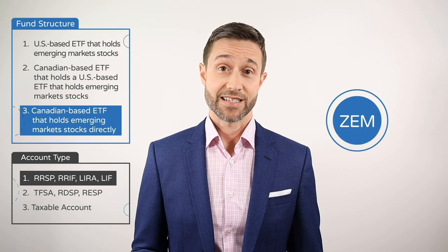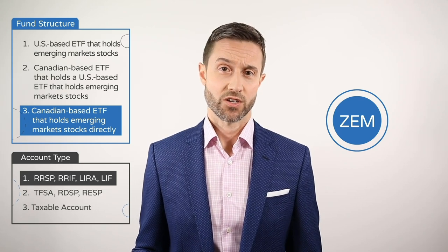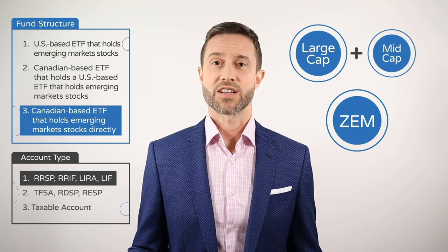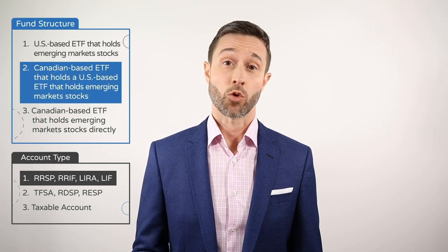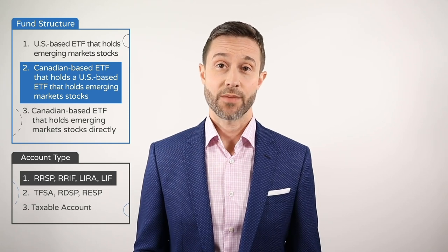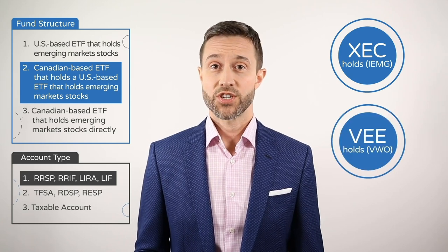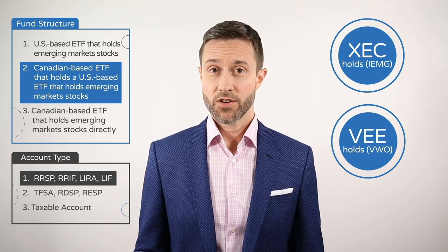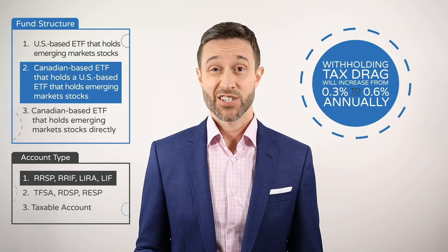The BMO MSCI Emerging Markets Index ETF with ticker symbol ZEM is a Canadian-based ETF that holds the majority of the emerging markets stocks directly, but it only invests in large and mid-cap stocks, so it's not as diversified as IEMG or VWO. If you instead held a Canadian-based ETF that holds a US-based ETF that holds emerging markets stocks — such as XEC, which holds IEMG, or VEE, which holds VWO — your withholding tax drag will increase from 0.3% to around 0.6% annually, which is not ideal.